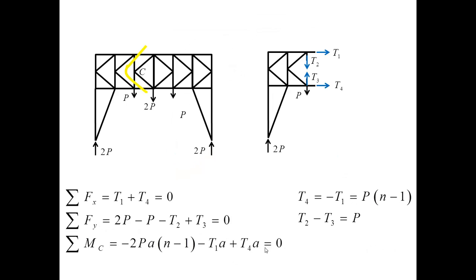Next, let me consider the following cut, shown in yellow, so that the free body diagram associated with this cut looks like this. The cut exposes the forces T1, T2, T3, T4, plus it includes the reaction force at A and the applied load P.